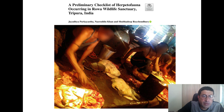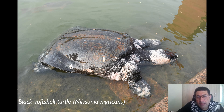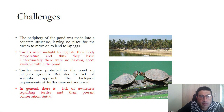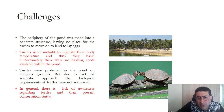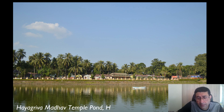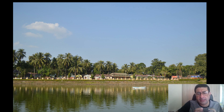Temple ponds at least retain some population of turtles, including the black softshell turtle, which is our flagship species. However, since they are conserved for religious rather than biological reasons, breeding and living facilities are not well provided. Most of the pond periphery is made of concrete, so turtles cannot climb out. We have seen many turtles with scars from trying to exit, and males are often missing because the structure was built on the belief that turtles, like fish, do not need to come out of the water.